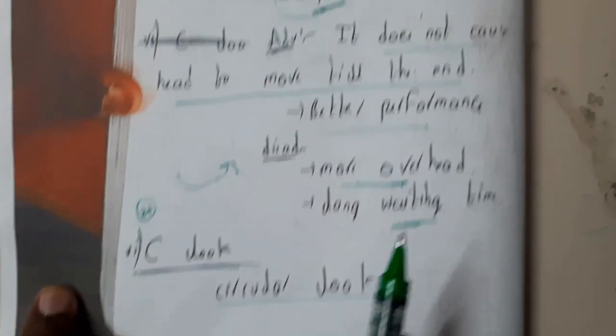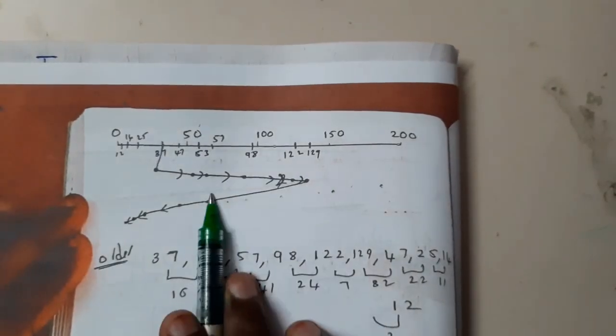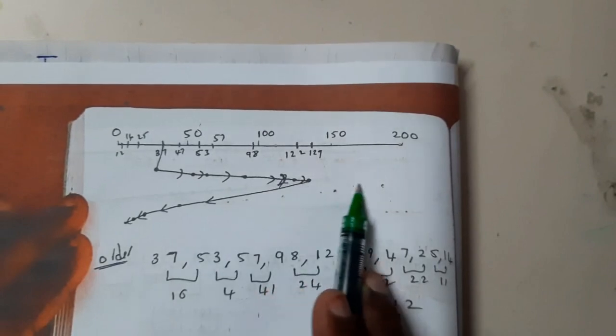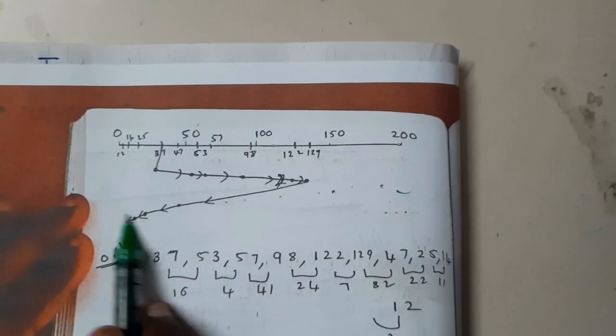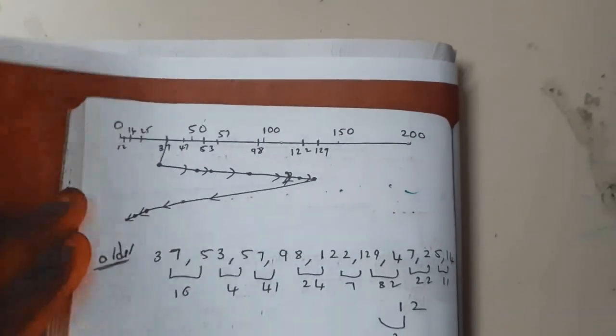C-LOOK is nothing but circular look. Here we stopped and returned back, whereas in circular you'll be going till the end and it is indirectly connected to the initial state so it will be continuing.